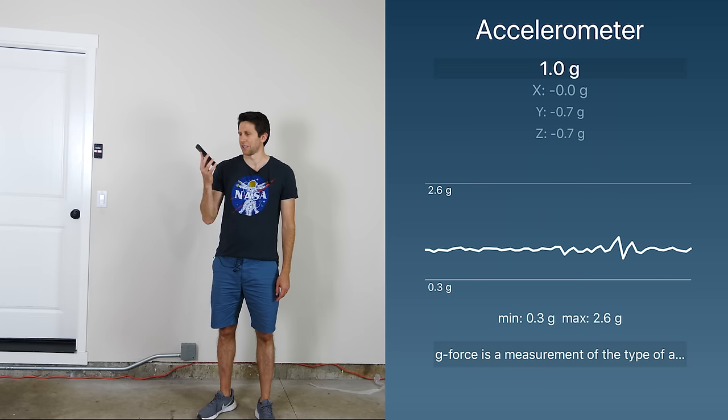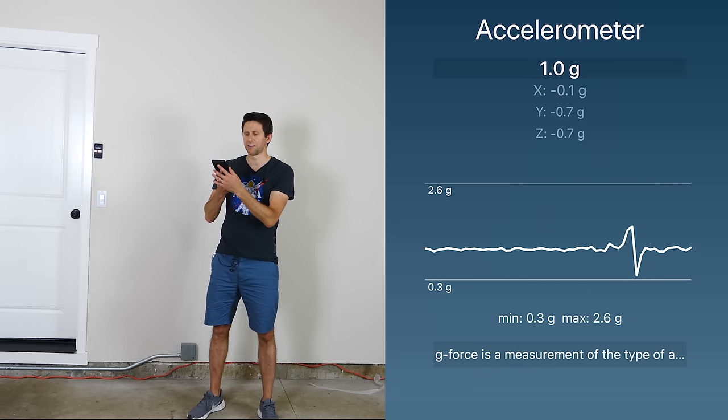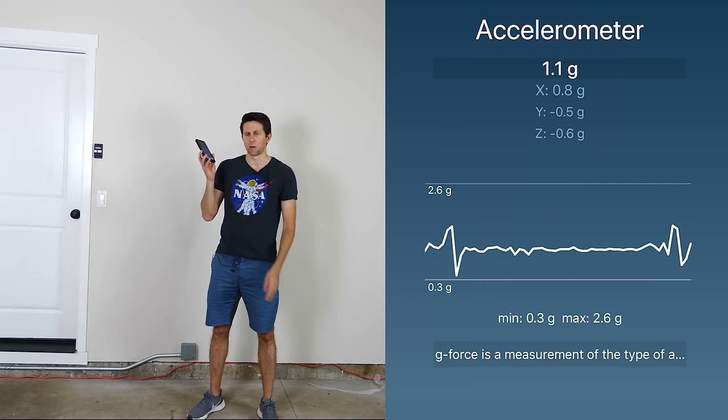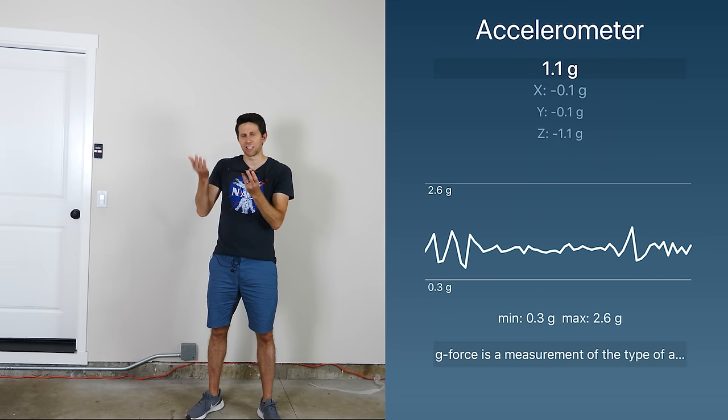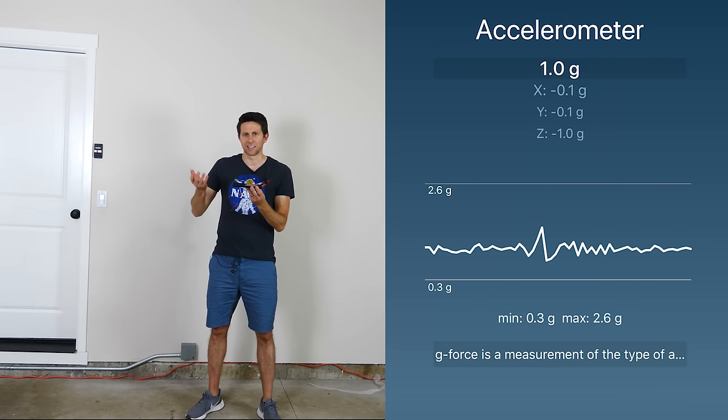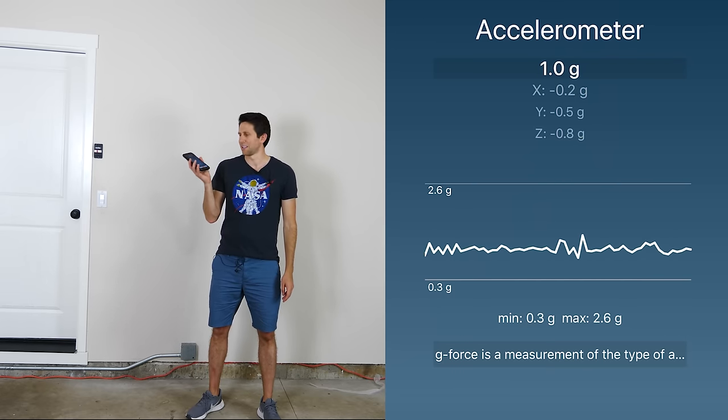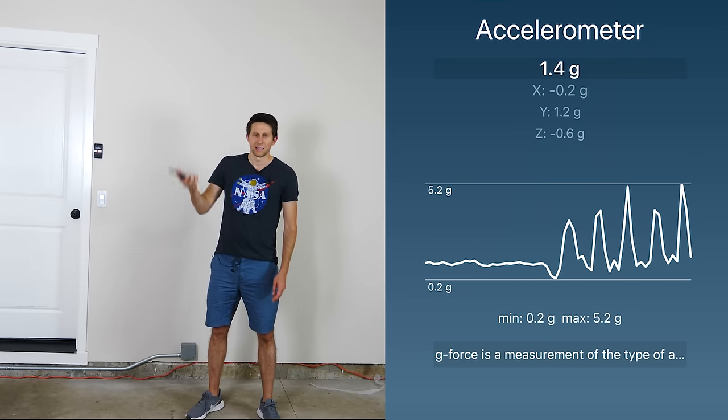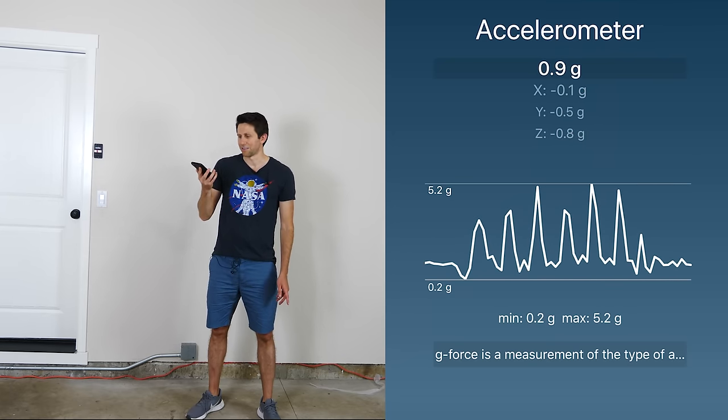I have an accelerometer on my phone here. So no matter how I turn it, if you add up the vectors X, Y, and Z acceleration, then you'll get one G. That's because there's one G of gravity always pulling down on us on earth. You can see that it varies a little bit when I move it up and down. You can get it to spike a lot because I'm just accelerating it in different directions.